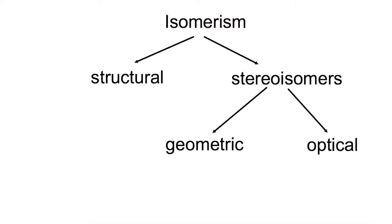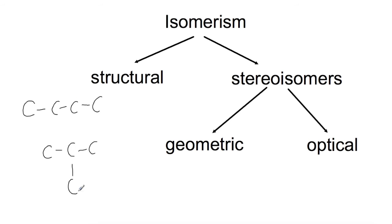For example, if we have a look at butane, we can join butane in a straight chain of four carbons, or we can have a branched chain off of three carbons. These would be two structural isomers as they contain the same number of atoms, however they're joined in a different way.